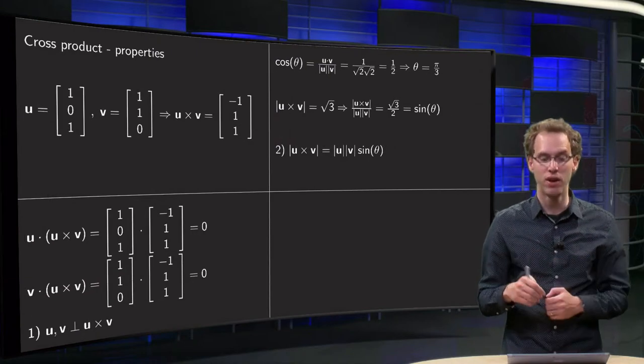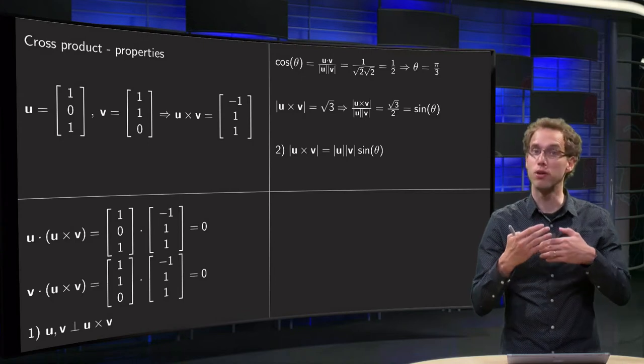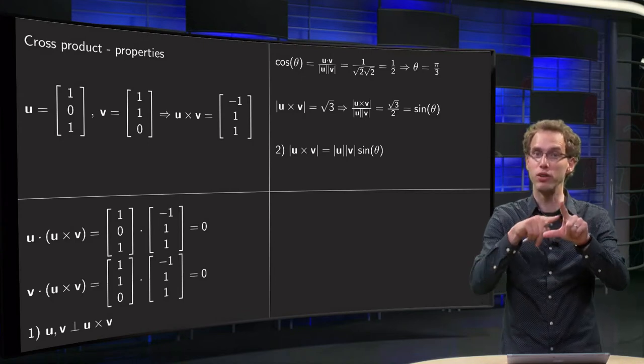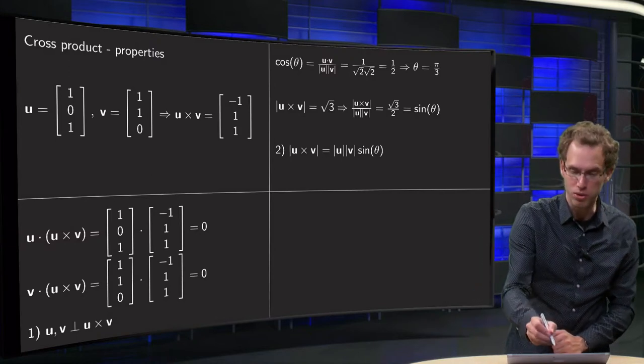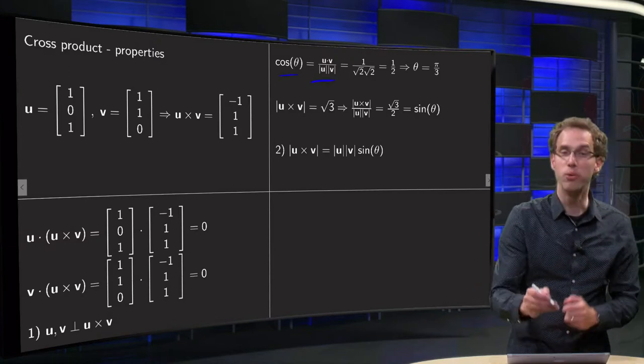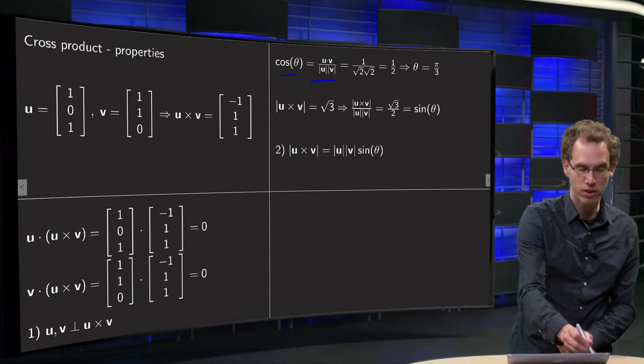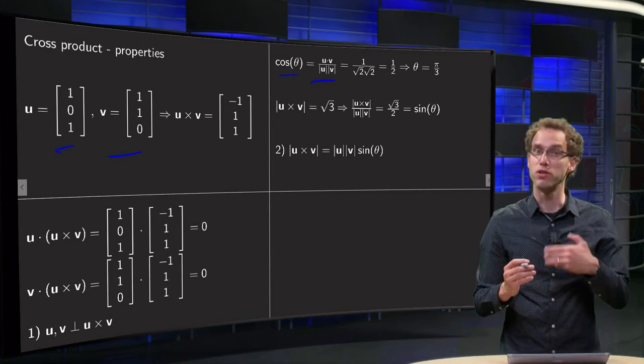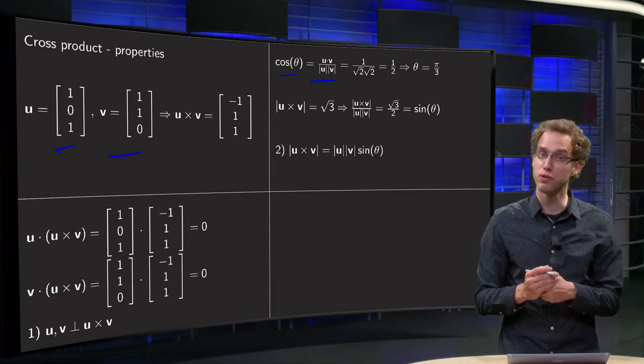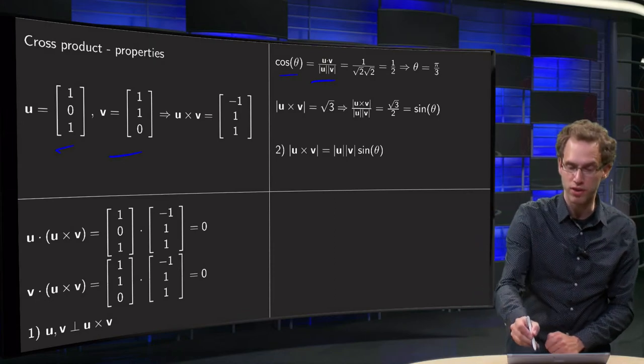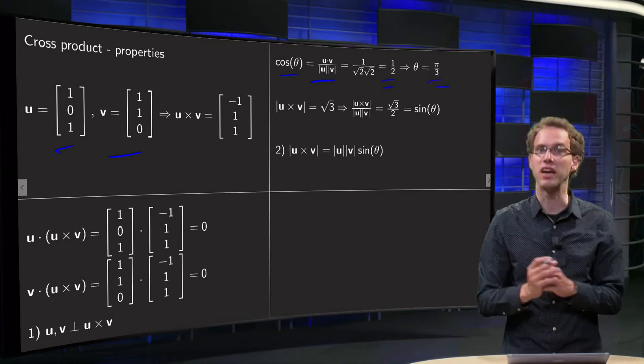We illustrate the second one. First of all we have our u and v and we can compute the angle between u and v using the inner product. Because we know that the cosine of theta equals u inner product v divided by the length. Well, computing the inner product between u and v, we get 1 plus 0 plus 0 equals 1. And both the lengths of u and v are square root of 2. So the cosine of theta equals 1 half. So we find theta equals pi over 3 in this case.